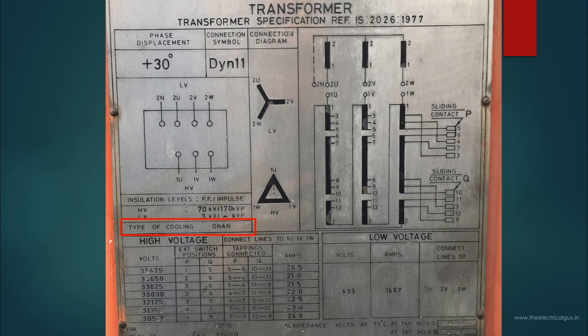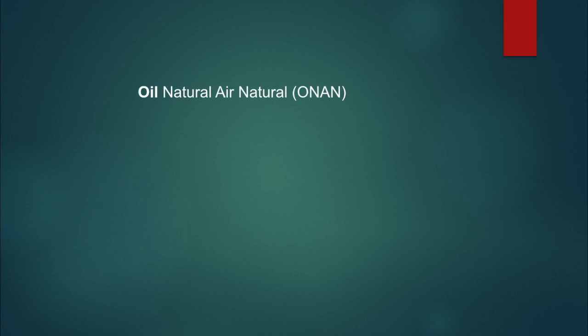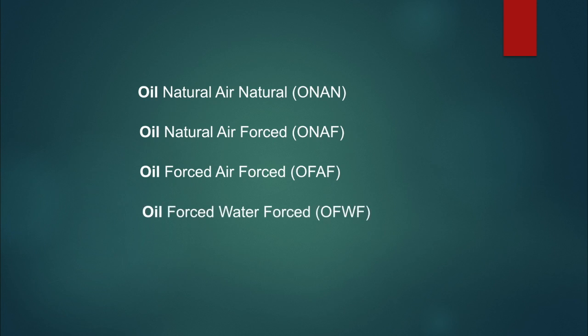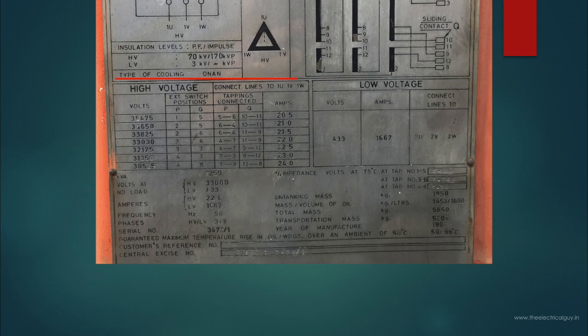Moving on here you can see type of cooling. Here it is mentioned ONAN. This indicates oil natural air natural ONAN. There are some other techniques as well which includes oil natural air forced ONAF, oil forced air forced OFAF and oil forced water forced OFWF. These are some of the techniques used to cool the transformer.